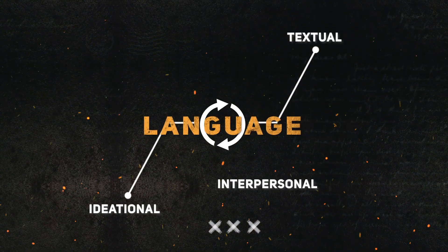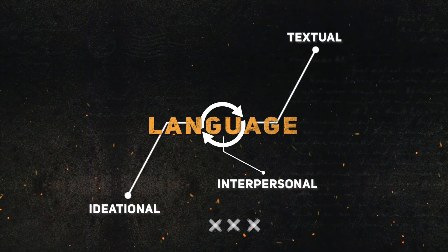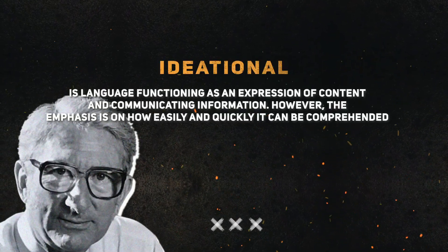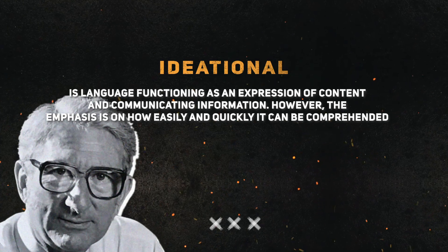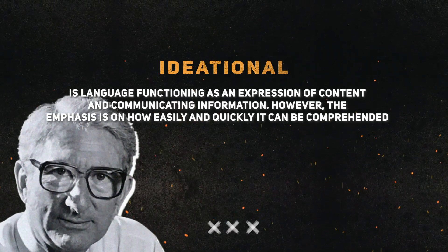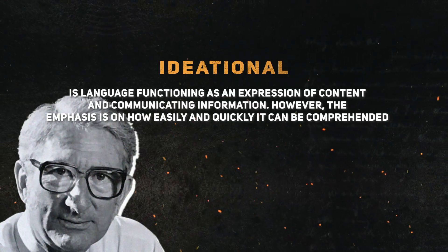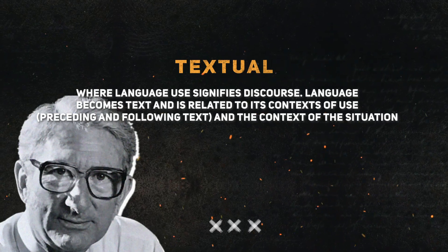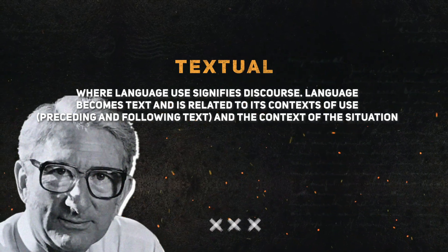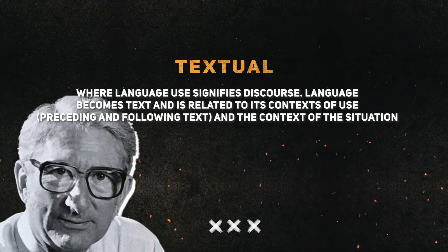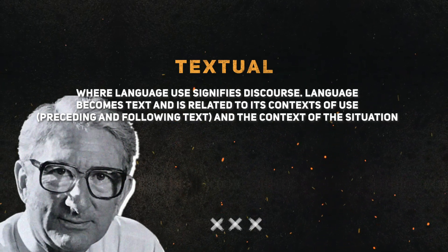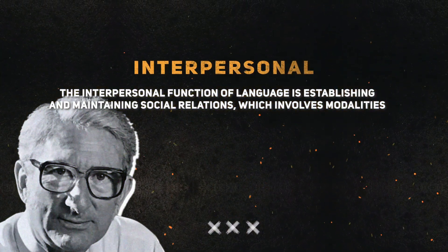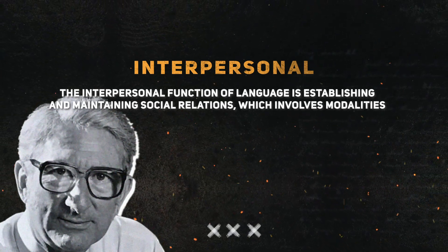Language has three primary functions: Ideational, Textual, and Interpersonal. The first function, Ideational, is language functioning as an expression of content and communicating information, with emphasis on how easily and quickly it can be comprehended. The second function is Textual, where language use signifies discourse — language becomes text and is related to its context of use, preceding and following text, and the context of the situation. Lastly, the Interpersonal function of language is establishing and maintaining social relations, which involves modalities.